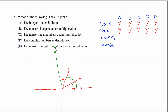Identity: we need one element in each set called the identity element, often denoted E. The idea is if you take any element A from your set and combine it with the identity in either order, you get back that element A. For the integers under addition, is there some integer that when added to any integer leaves it unchanged? Yes — zero. Four plus zero equals zero plus four equals four. The identity element is zero.